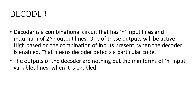We have already studied that circuits can be classified into two different categories: combinational circuits and sequential circuits. A decoder is an example of a combinational circuit.